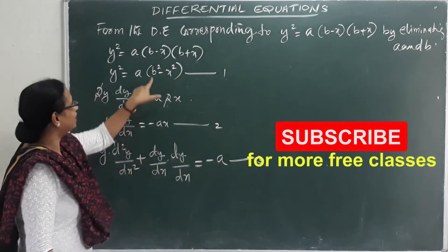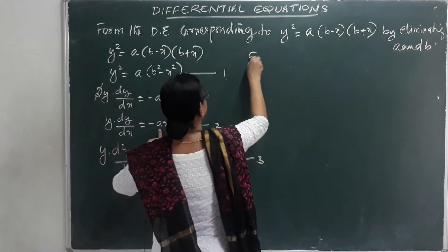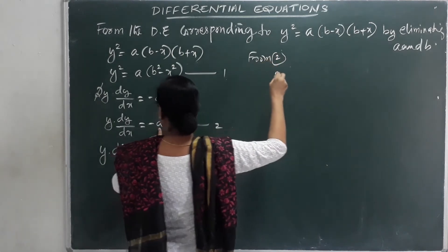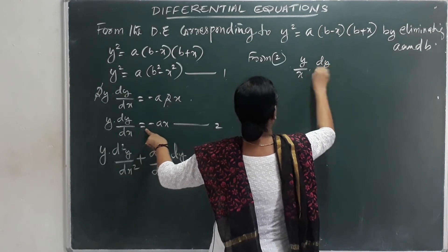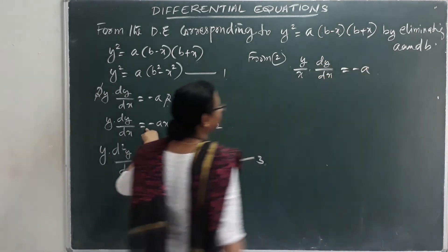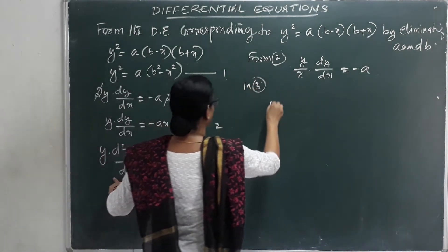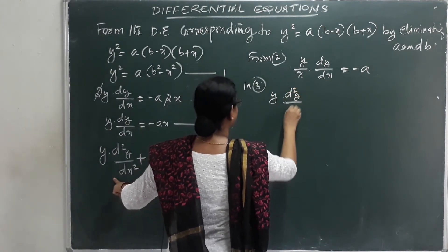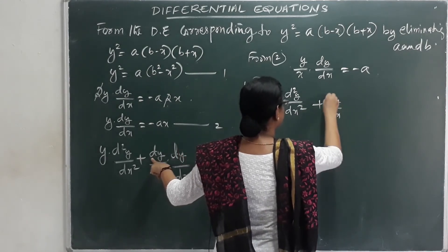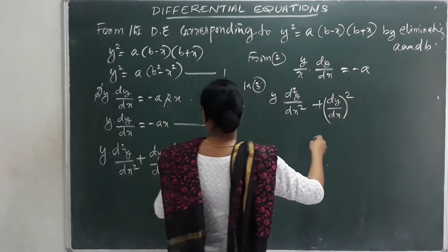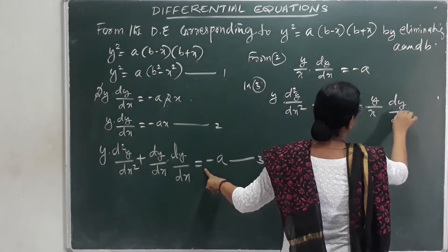From equation 2, we get: y/x · (dy/dx) = −a. Substituting into equation 3: y·(d²y/dx²) + (dy/dx)² = y/x · (dy/dx).